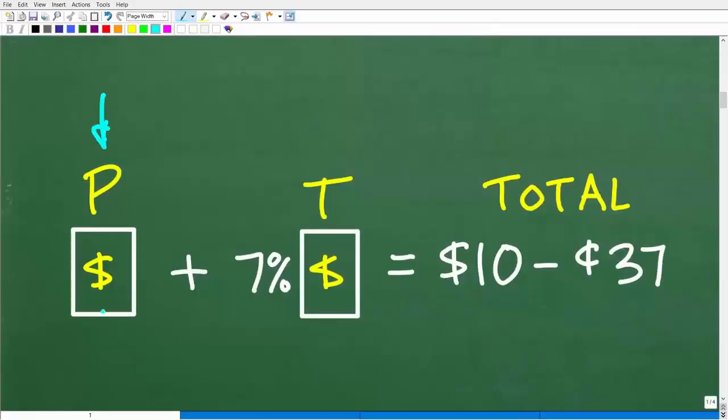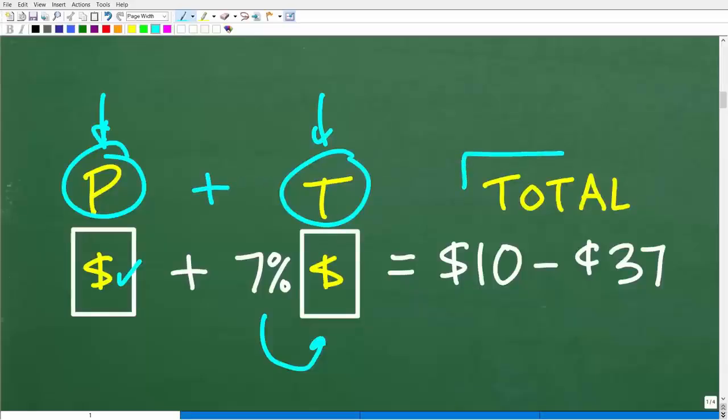So here we have a product. We don't know how much it costs, but we know we have to pay 7% tax on it. So here is the cost of our product, whatever that is. Now, the tax, the sales tax, is going to be 7% of whatever the cost of the products is, but this will be our tax. So our total cost is going to be the cost of the product plus the respective sales tax. So that is our total.